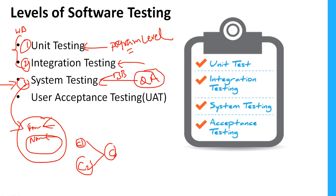Once the QA team completes system testing, the customers or users will perform user acceptance testing (UAT) — checking whether the software works according to their requirements and whether the use cases they provided are being satisfied. That testing is done by the users.